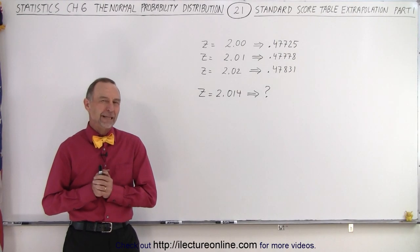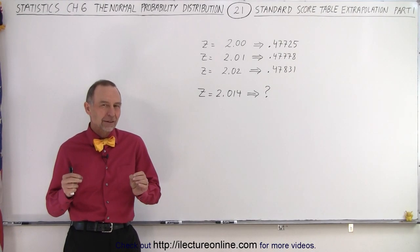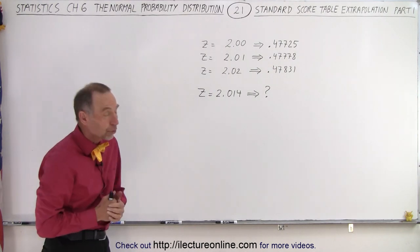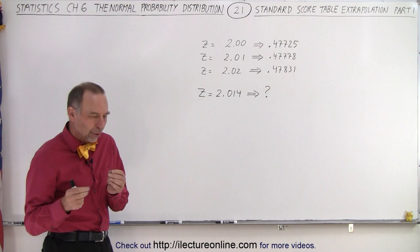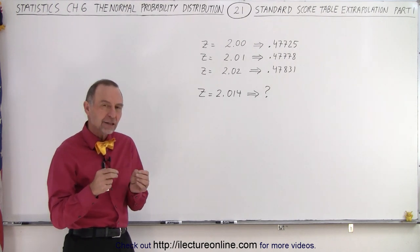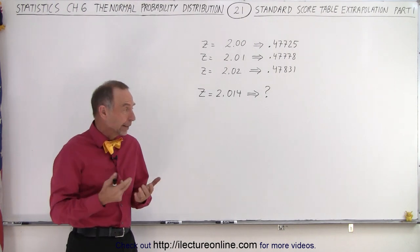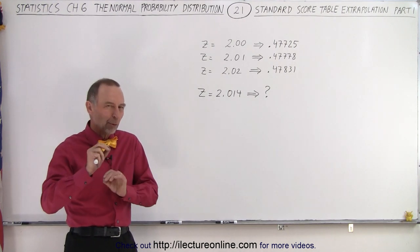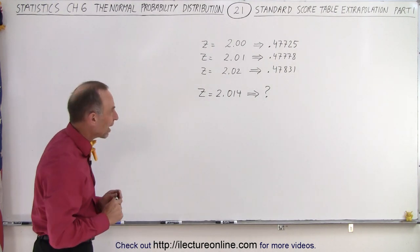Welcome to our lecture online. In this video we're going to look at extrapolation. Of course we're dealing with the standard score tables and sometimes we need to find a value for Z, the Z score, that is more accurate than what the table offers us. So we have to what we call extrapolate between values.